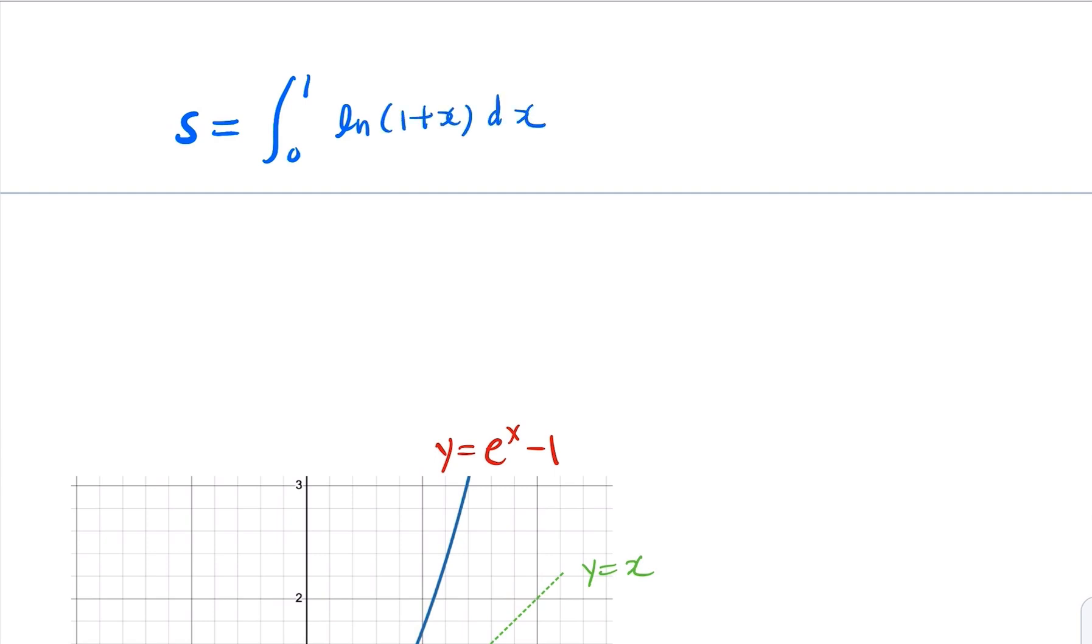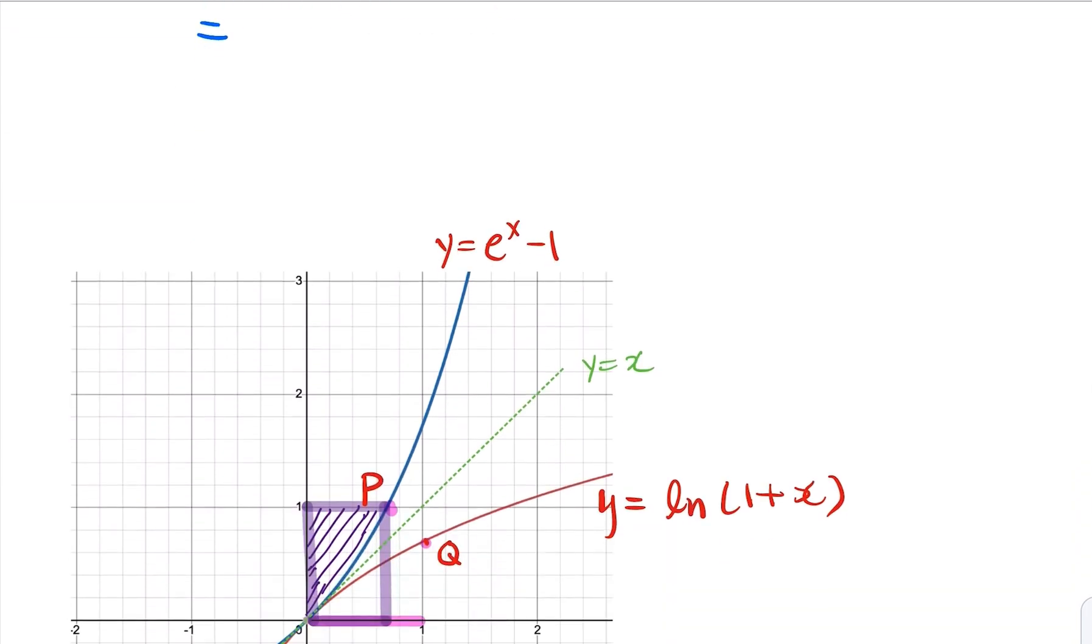Now we claim that by the symmetric property of inverse function is going to be the shaded area here.